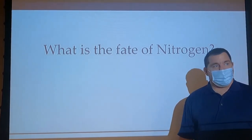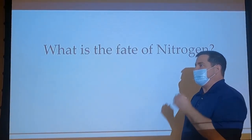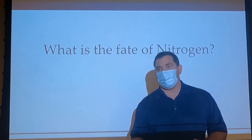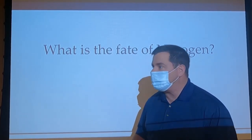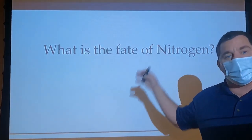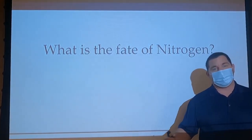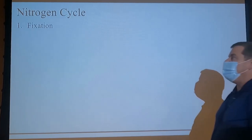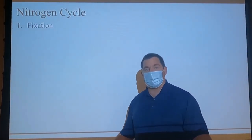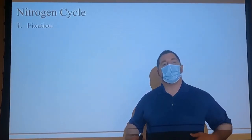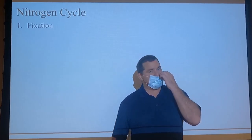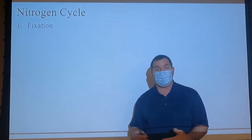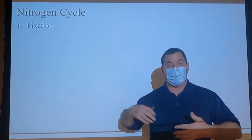The biggest question to ask is: what is the fate of this nitrogen in the environment? If you just think about going through the nitrogen cycle in order, it's not really that difficult. First is fixation. When we plant a legume like a soybean, or a legume cover crop, we inoculate the seed with Bradyrhizobium, which forms a symbiotic relationship with the plant and fixes atmospheric nitrogen.